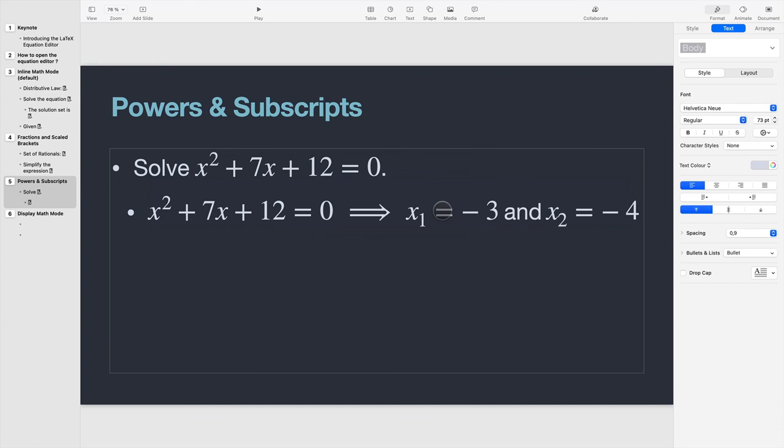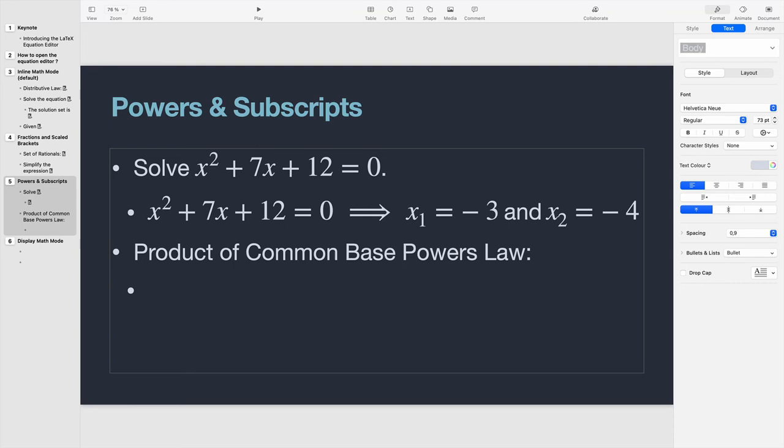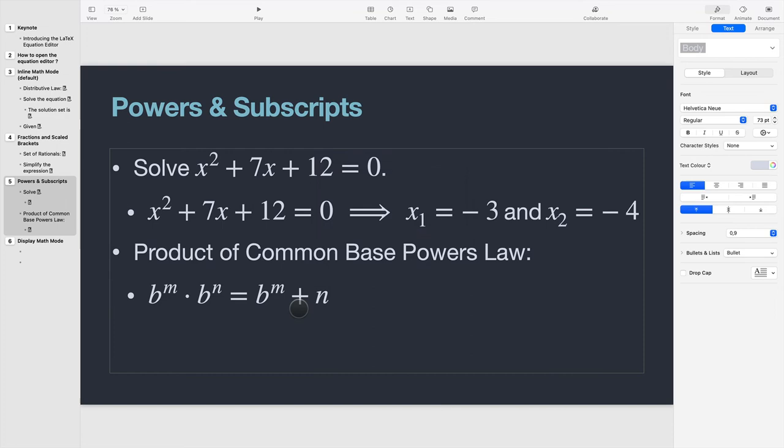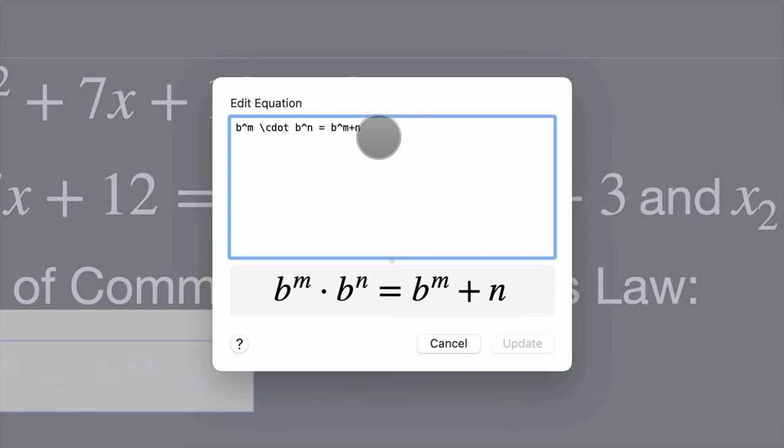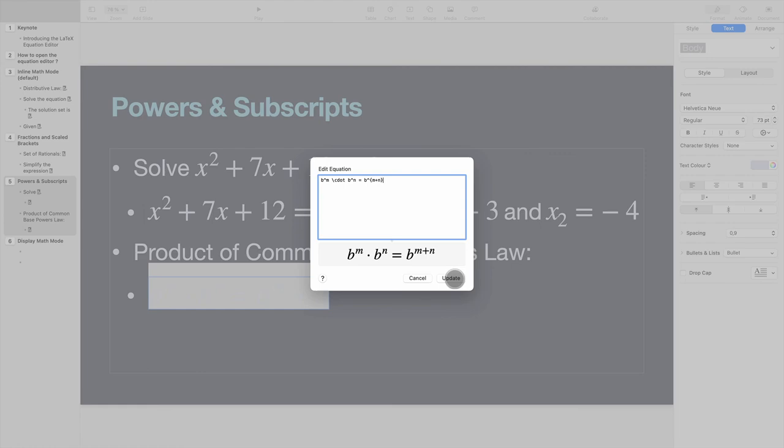Now, there is one thing that I should point out here. And maybe I can do this through the example of the product of common base powers law. So here I have a product of two powers. So B to the power of M times B to the power of N. And we know that this is always equal to B to the power of M plus N. So if the base is the same, we add the exponents. But that's not what is being, and that's not the output. So to fix this, we are going to use our curly braces here to denote the exponent. So M plus N is the exponent and that will fix that.